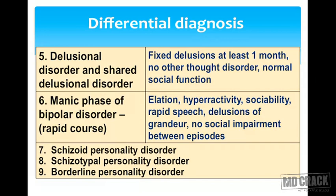Schizoid, schizotypal, and borderline personality disorders do not show the typical features of schizophrenia for more than six months and must be differentiated from it. Key differentiators: psychotic disorder due to medical condition presents with visual hallucinations and a definite medical illness; brief psychotic episode lasts less than one month; schizophreniform disorder lasts up to six months; duration distinguishes these conditions.